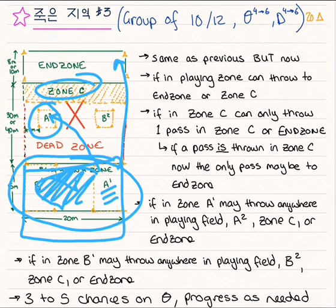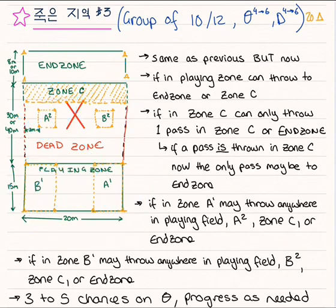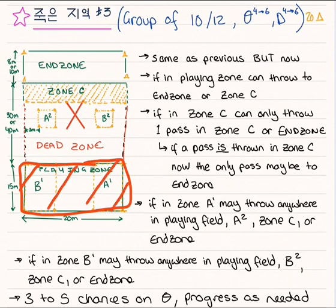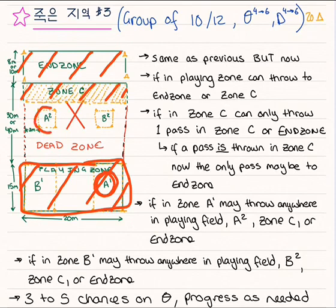This throw does need to be accurate, hence the size of the target space — because if it lofts out of the field, comes too short, or lands in the middle, the chances of it being intercepted are high. So if I'm in area A, I can throw it anywhere in that area, anywhere in the end zone, or anywhere in zone C.